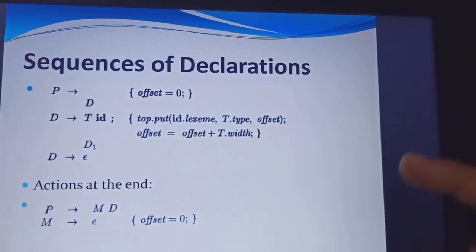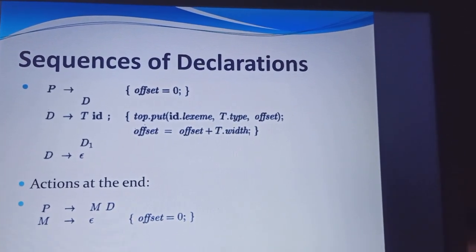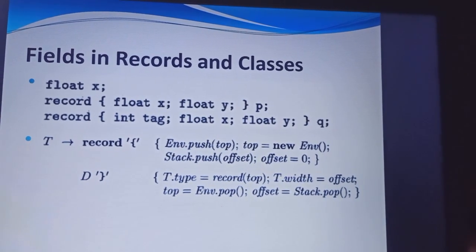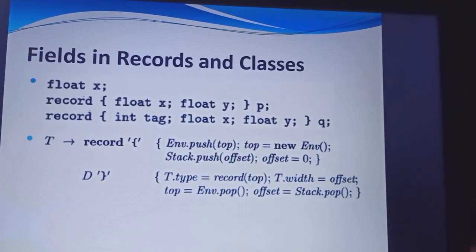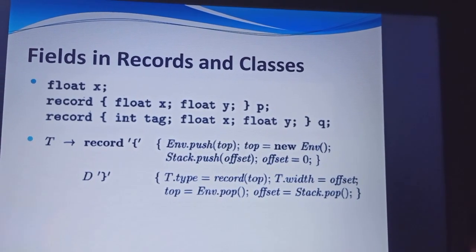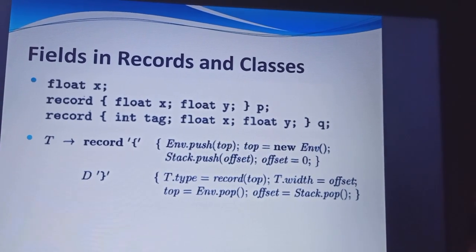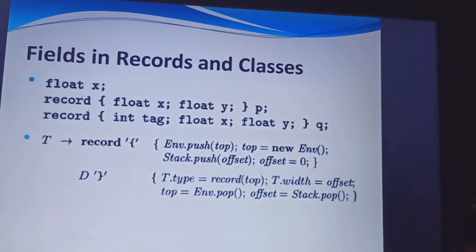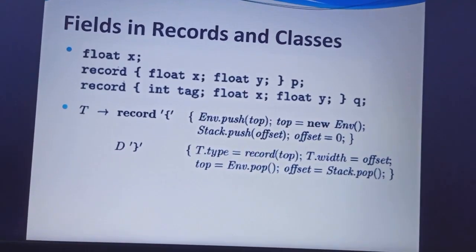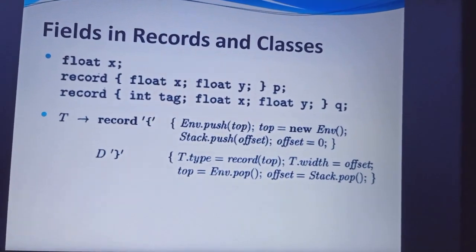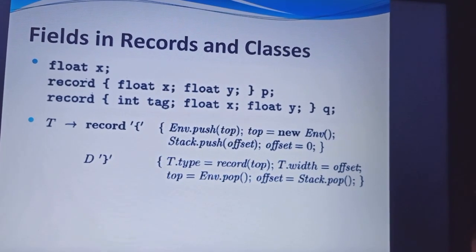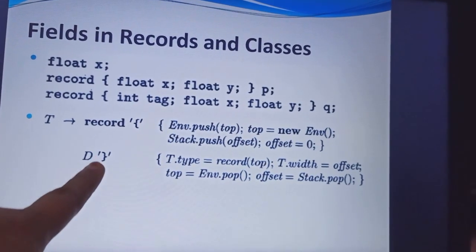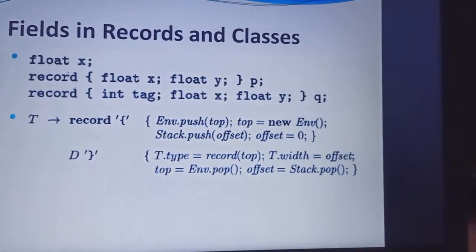Next is the sequence of declarations in type equivalence. After that, fields, records, and classes. First a floating value x is taken. In a record value, two floating values x comma y are taken, and another record is created with tag x y. So two records are being created: one is the x y data record and another is the x y along with the tag record. t tends to record of, taking two values along with their offsetting values.